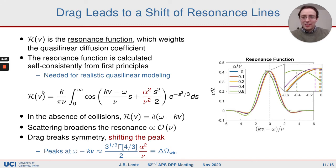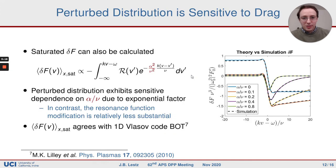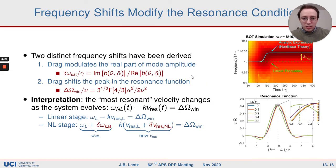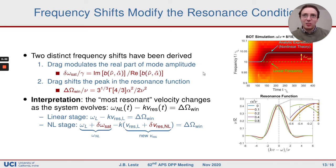The resonance function is an important quantity because it's an input into quasi-linear codes for fast ion transport. We've calculated it consistently in a more general form involving a collision operator that has both drag and scattering. There's more detail on how drag seems to nonlinearly change the resonance condition by a little bit.